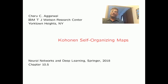In this video, we will introduce the Kohonen Self-Organizing Map. The Kohonen Self-Organizing Map is useful for clustering, dimension reduction, and visualization. These are competitive learning algorithms that are fundamentally different from most of the various types of neural networks that we have discussed so far.